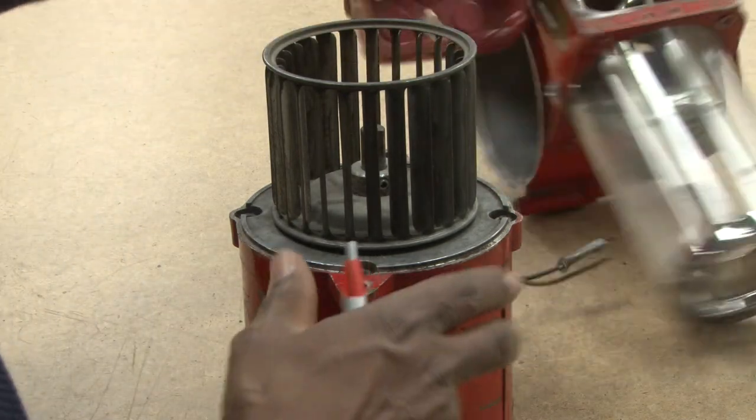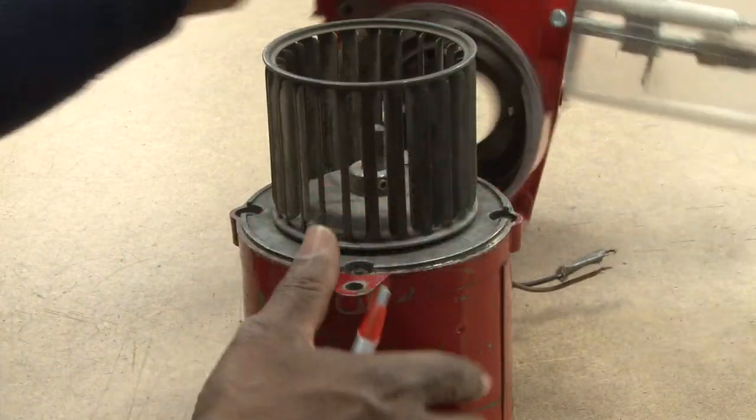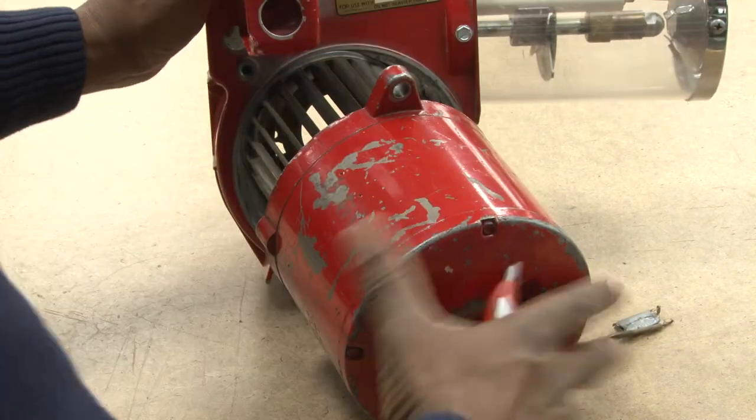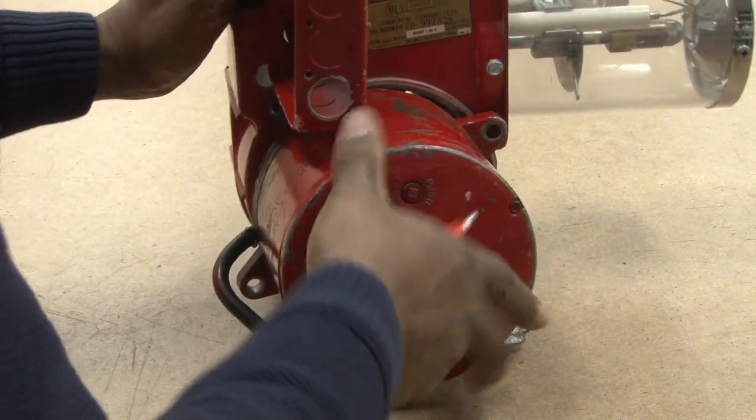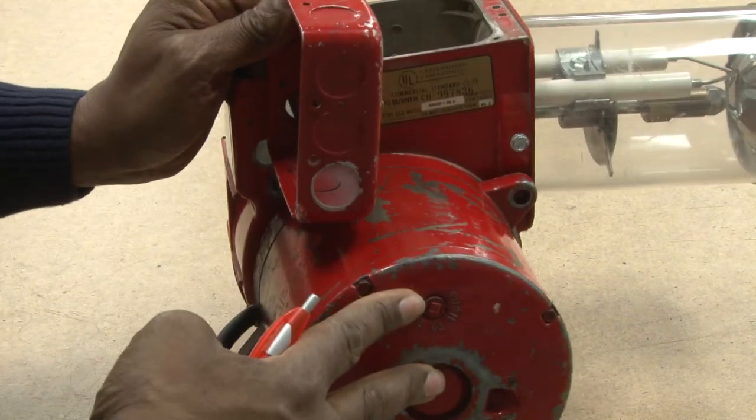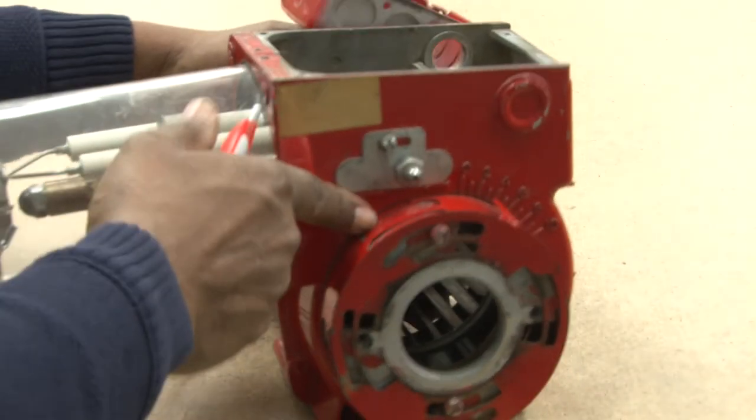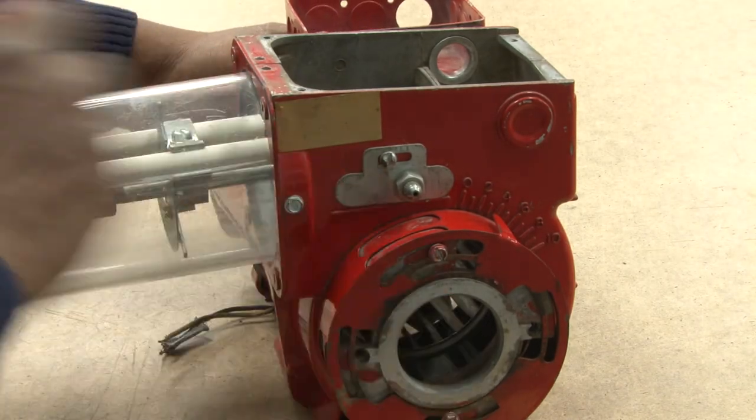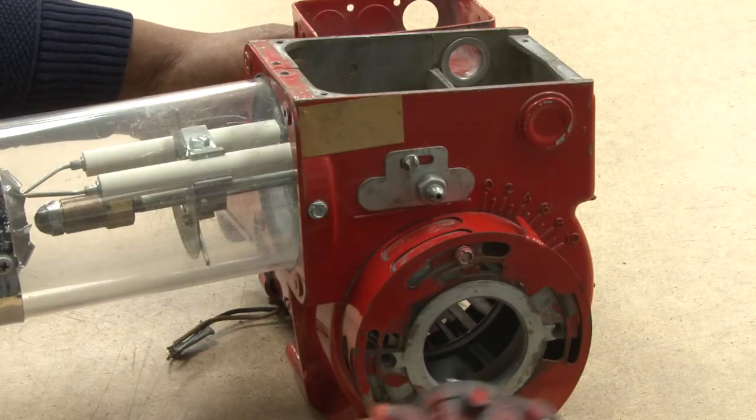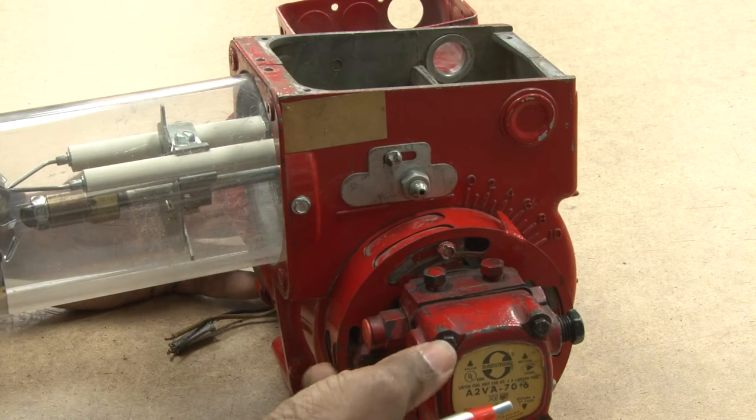So we're going to join this together. We will take the blower assembly, connect it to the housing, take a coupler, go through this, then we will connect it to the pump.